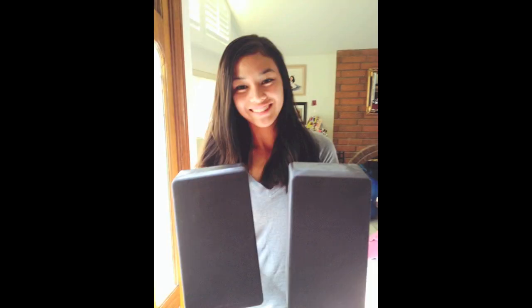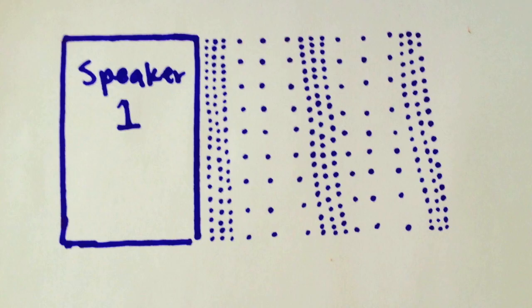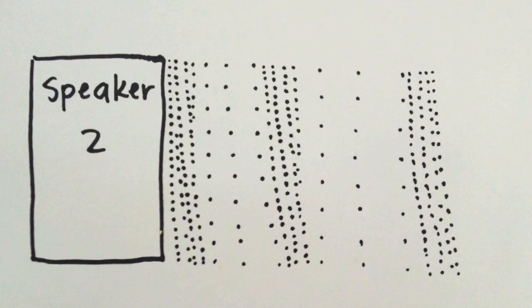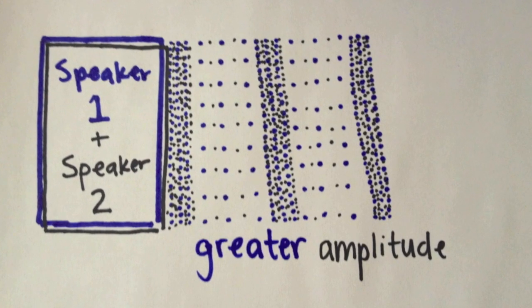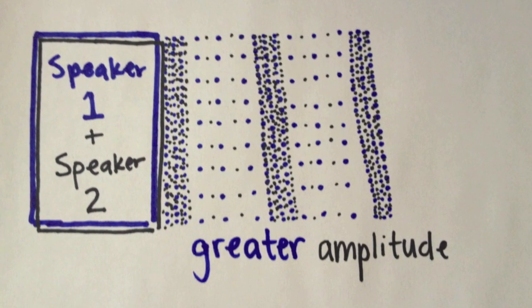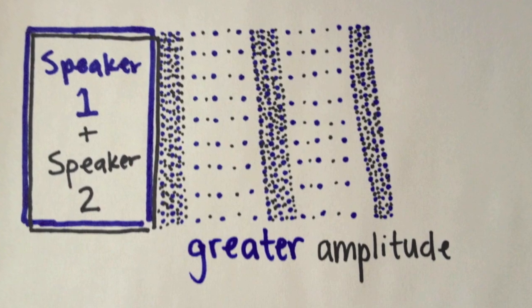Speakers facing the same direction are an example of constructive interference. Two speakers can create identical longitudinal waves in phase with each other. If waves traveling in the same direction are in phase, the compressions and rarefactions will match up and increase the amplitude. The greater the amplitude of a sound wave, the louder the volume will be.